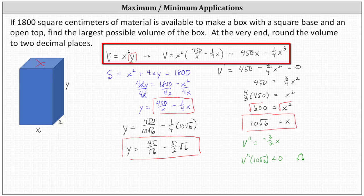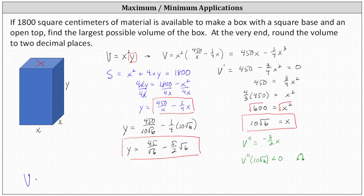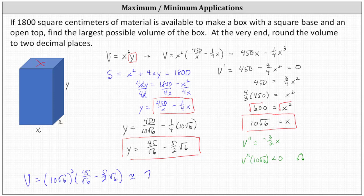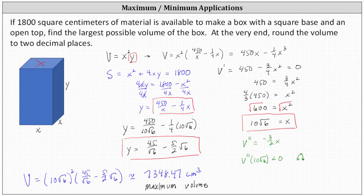Since y is already found, we use the original volume formula. The maximum volume V equals 10 root 6 squared, times the quantity 45 divided by root 6 minus five-halves root 6. We are told to round to two decimal places. Using a calculator, the maximum volume is 7,348.47 cubic centimeters. This is the maximum volume under the given conditions.